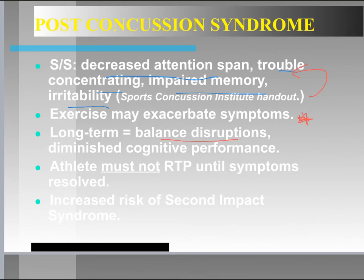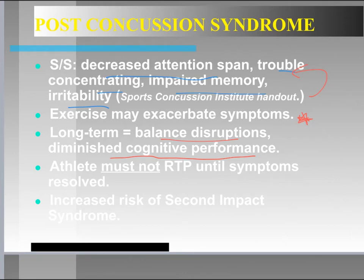Long-term consequences include balance disruptions and diminished cognitive performance — inability to recall things or maintain focused attention in class. When these symptoms are exhibited, the athlete should not return to play until symptoms are resolved and have been resolved for at least seven days. Returning to play while symptomatic increases the risk of secondary impact syndrome, which can lead to instantaneous death on the field.